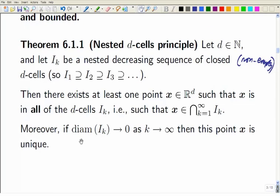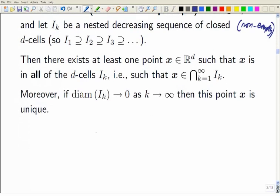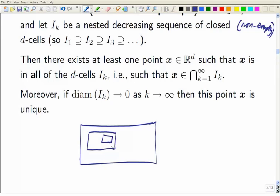And when is it unique? It's unique if the diameter tends to zero. So that exactly corresponds to the one-dimensional result. And so a typical picture might look something like this. You've got a big closed d-cell, and then you take a smaller one inside it, and then a smaller one inside that, but you don't know exactly where they're going to be. They don't have to be sort of central. But as long as they're shrinking, then there'll be at least one point common to them all. Here's a typical picture.